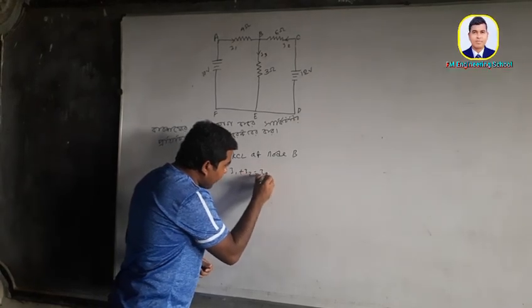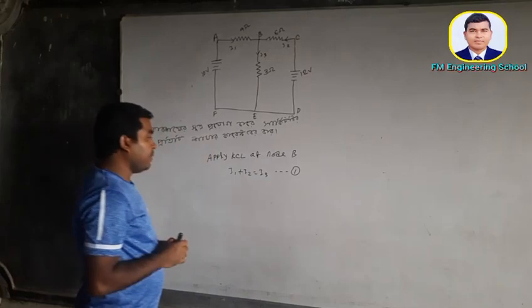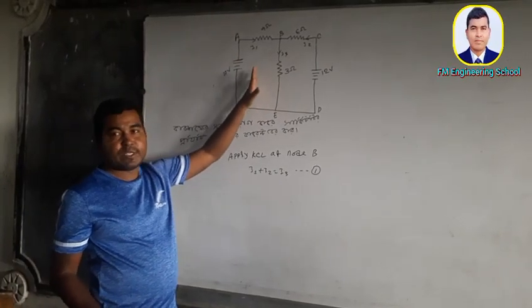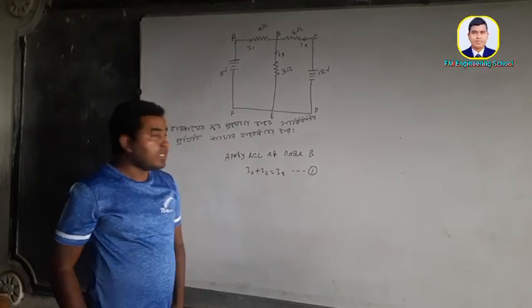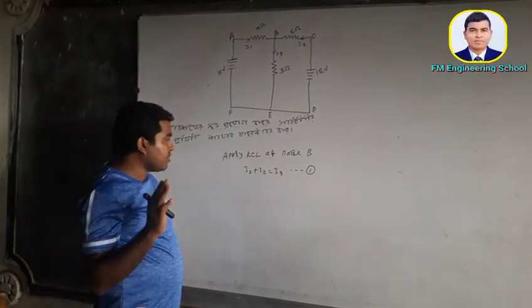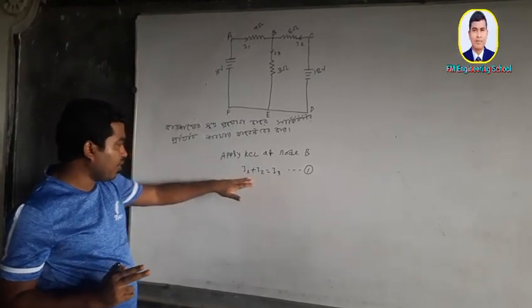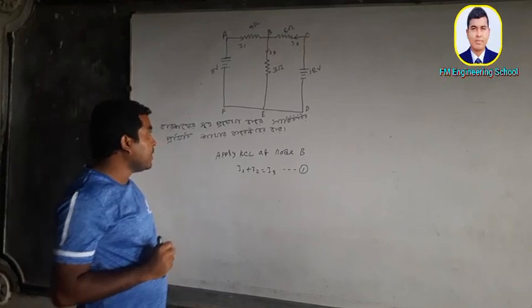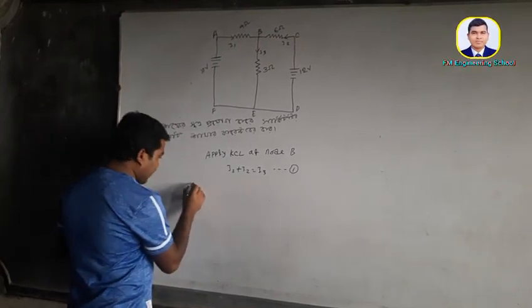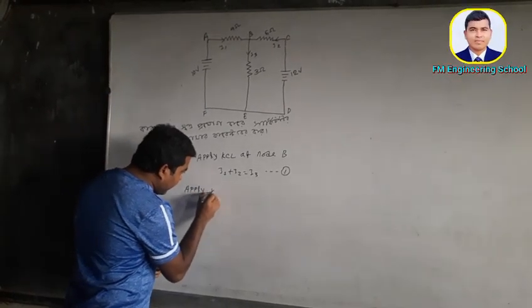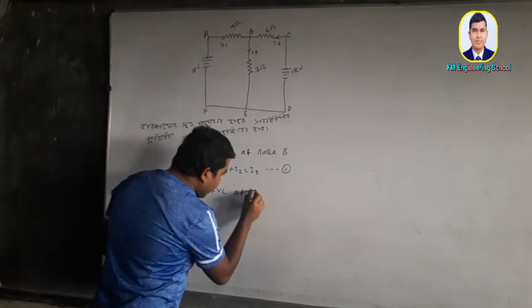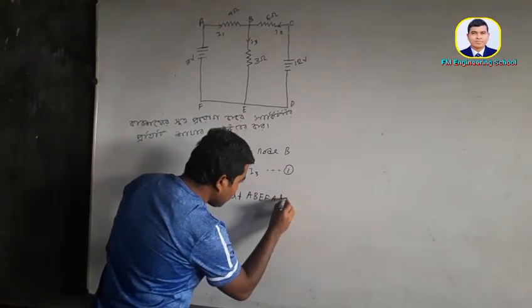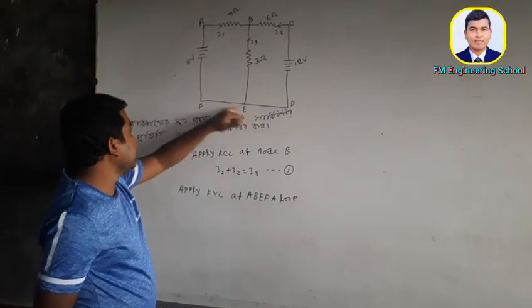I want to read this as a loop. There are 3 loops here — obviously 3 loops. The loop involves I3. When it comes to 2 loops, it will take a loop. So apply KVL: A, B, E, F — A loop. This one is A, B, E, F loop.